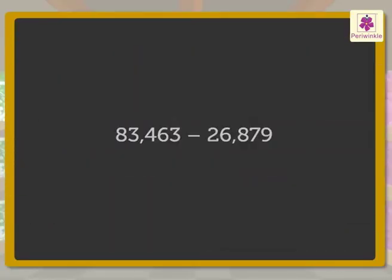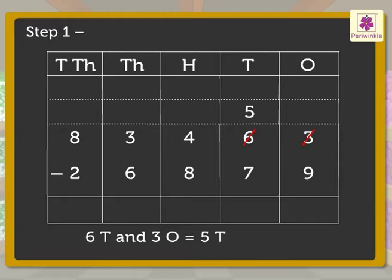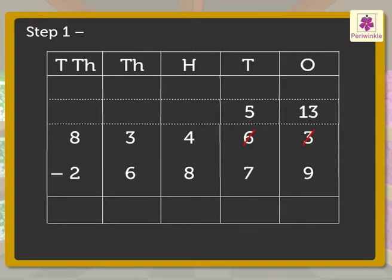Now, let us look at the process of subtraction of these numbers directly. Step 1: Subtract the digits in the ones column. As the ones are not enough, we regroup the tens. That is, 6 tens and 3 ones is equal to 5 tens and 13 ones. Therefore, 13 minus 9 is equal to 4 ones.